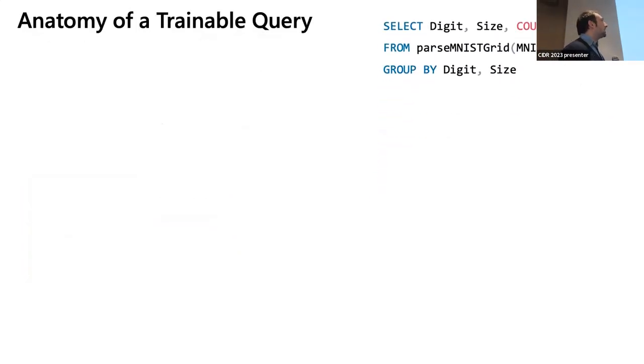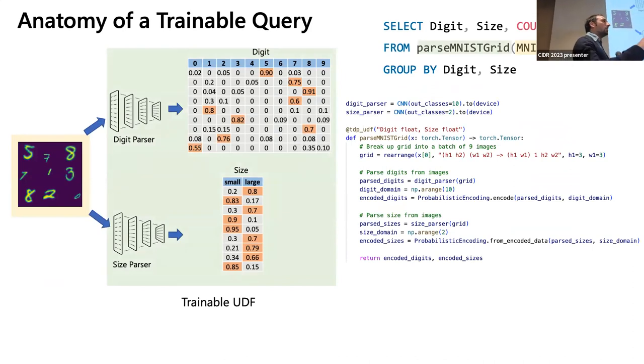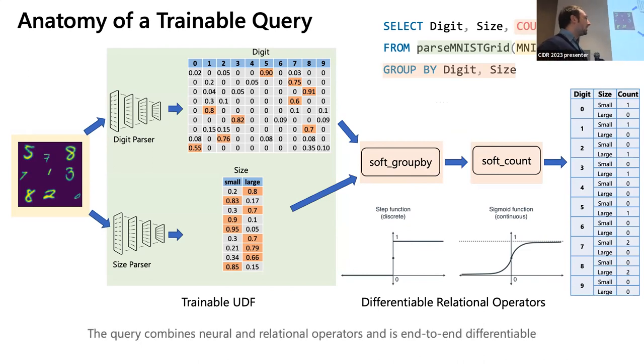So let me explain a little bit how does this work internally. We have our query. We have our image. We use the UDF. Basically, the UDF contains two CNN models. One for the digit parsing and one for the size parsing. This is actually kind of simple models. And these models are allowed to go from images to some tensor embedding that is able to be understood by SQL. So this is quite intuitive. That basically means that the first number 90% probability is a five, and the first number 80% probability is large. Then since our SQL engine is able to understand tensors, is able to understand this kind of encoding. So we added a soft implementation of some of the operators. In this case, a soft group by, a soft count. And it basically allows us to combine the neural network parts with the database operations. It is able to do everything end-to-end differentiable.